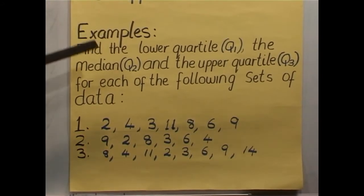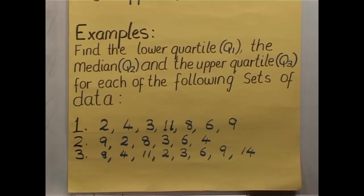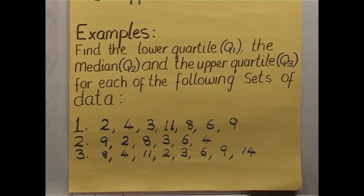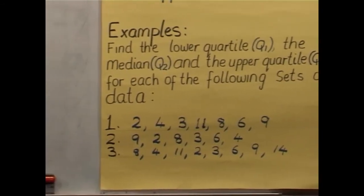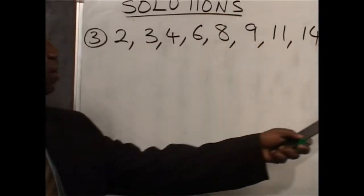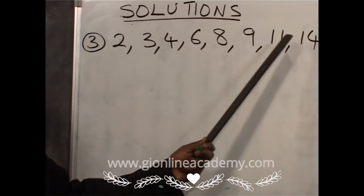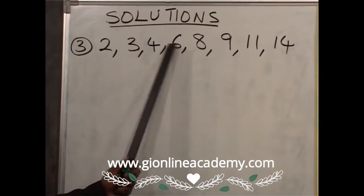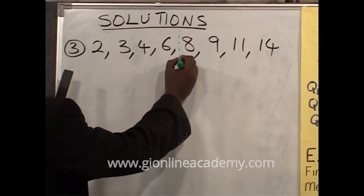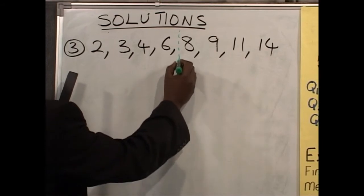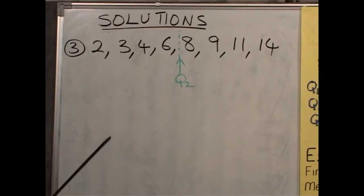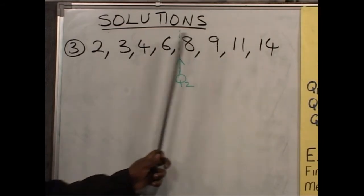Our question: we have to find the median, the lower quartile, and the upper quartile. The first step, as we said, is to fix the position of the median. We have 1, 2, 3, 4, 5, 6, 7, 8. Exactly halfway will be the median — 4 on the right-hand side and 4 on the left. So our median will be exactly halfway there. This will be the position of Q2, the median. The median has divided the set into two equal parts.